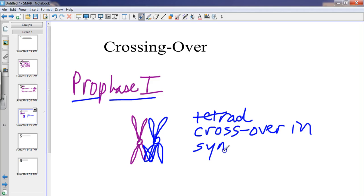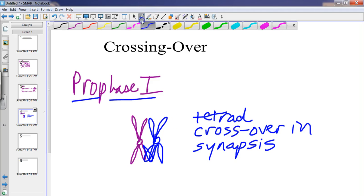Synapsis is the position that these chromatids are in so that crossing over can occur. So a little bit of the purple will go to the blue, a little bit of the blue will go to the purple. So that is an exchange of genes. That's why they call it crossing over.